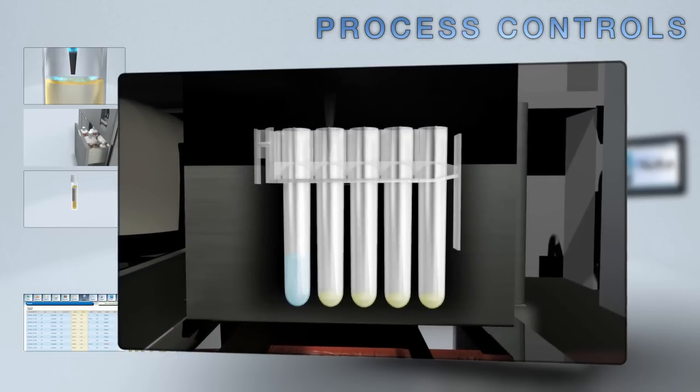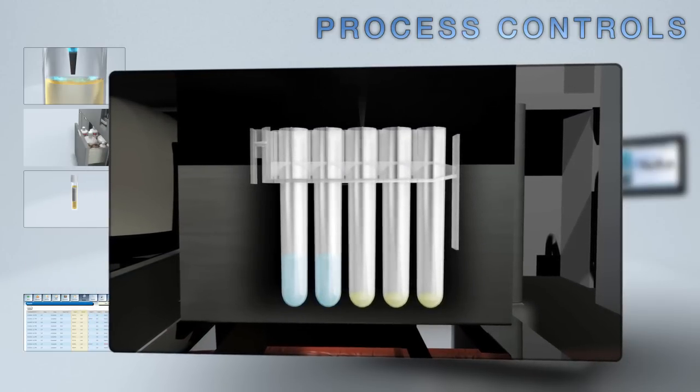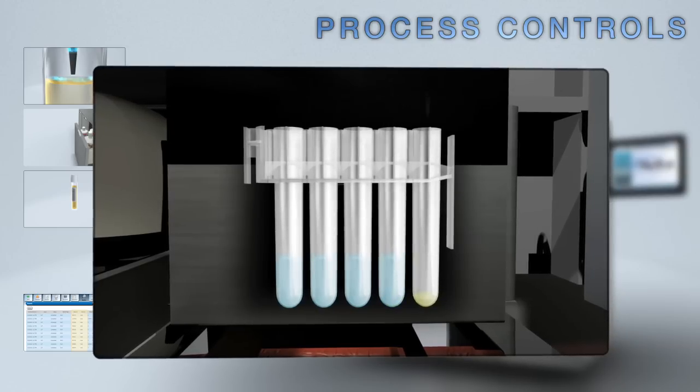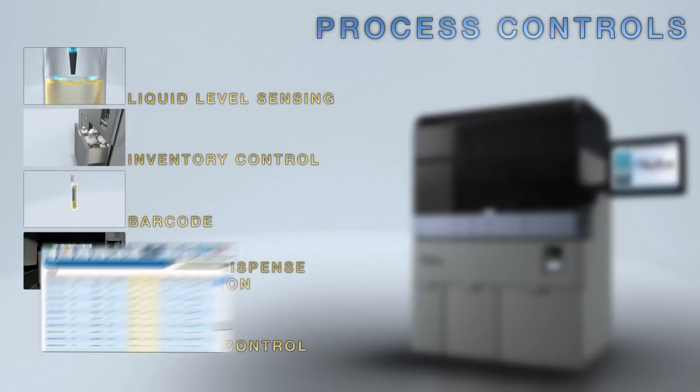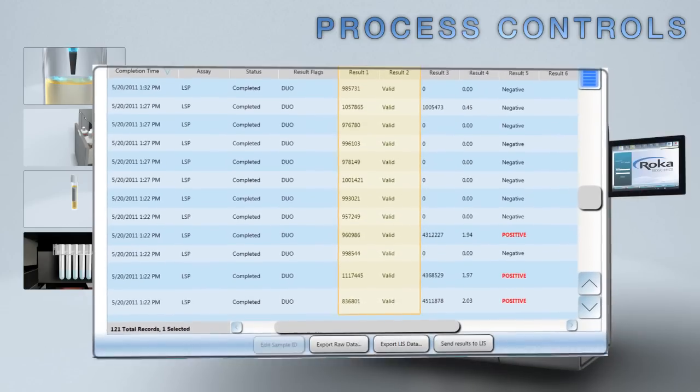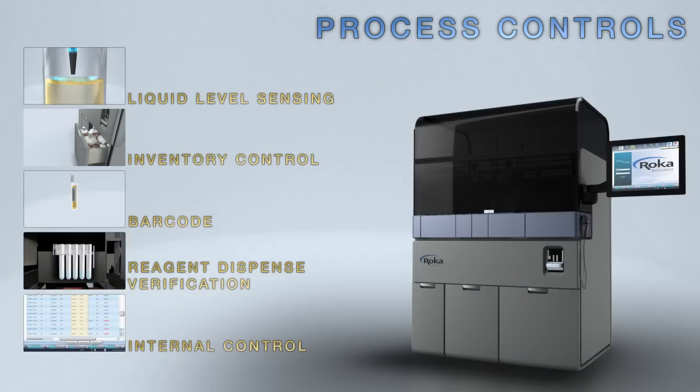Reagent dispense verification confirms that each reagent is pipetted each and every time, assuring the accuracy of each result. An internal control in every test verifies that all steps of the assay have been performed accurately. These process controls give you the confidence that you require in your results.